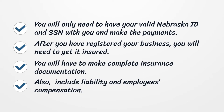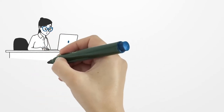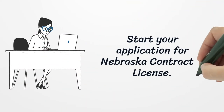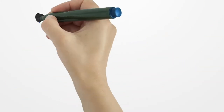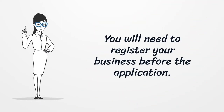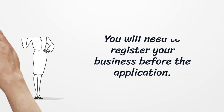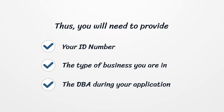After you have registered your business, you will need to get it insured. You will have to complete insurance documentation and include liability and employees' compensation. Start your application for your Nebraska contractor license — you will need to register your business before the application, providing your ID number, the type of business you are in, and the DBA.